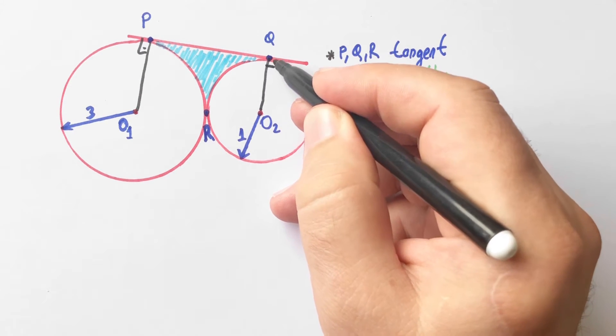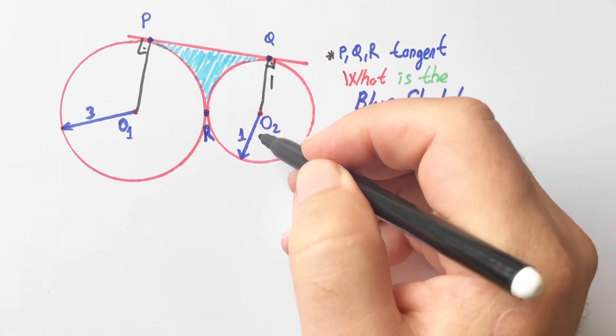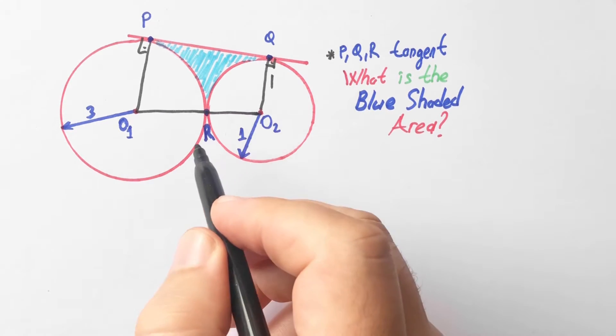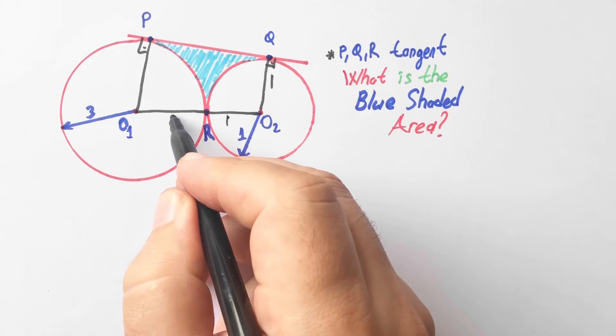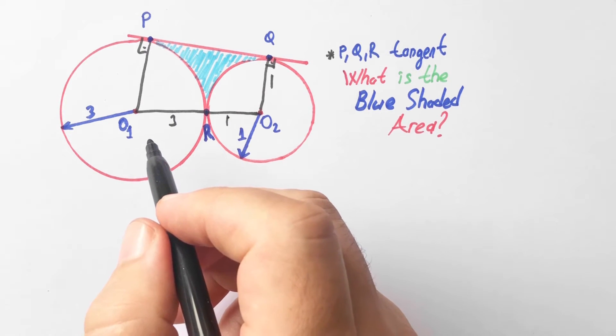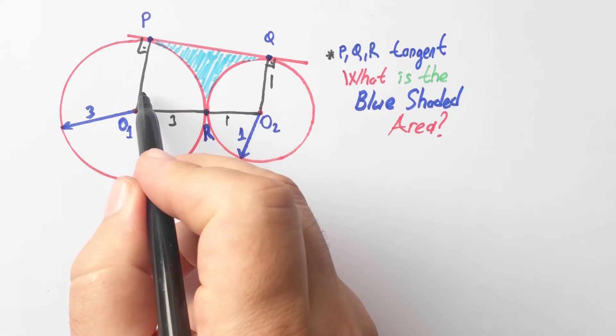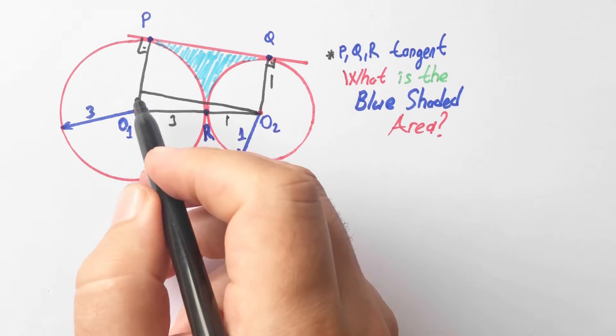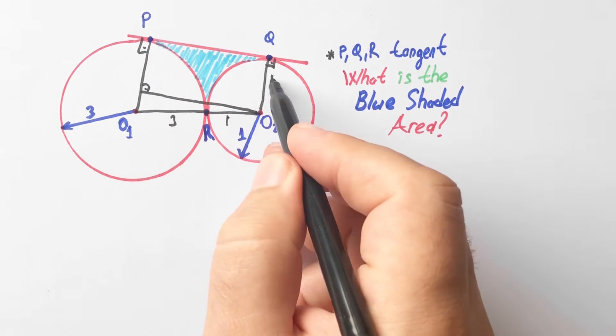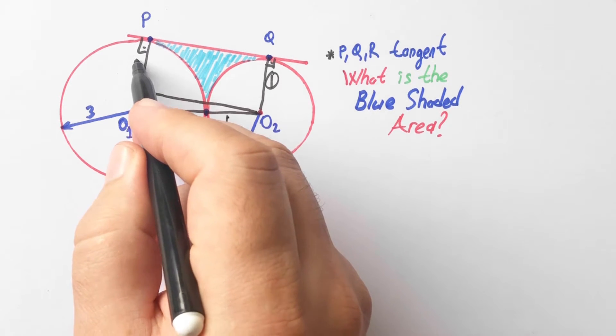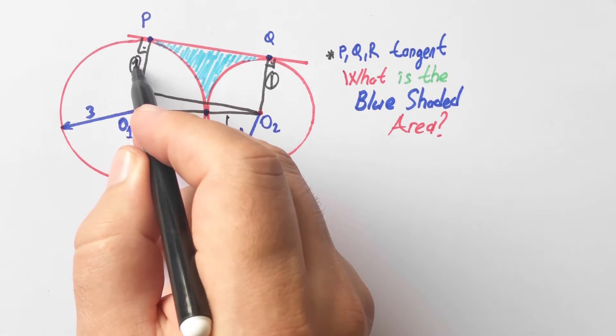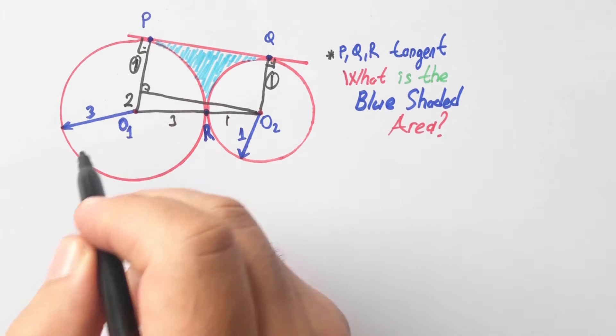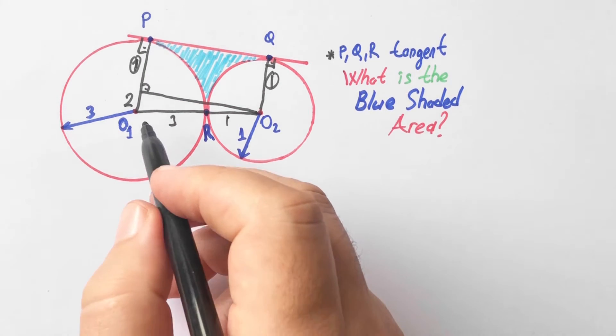Radius is one. So if we connect, the radii are linear because of tangent. Let's draw a perpendicular one more. Radius is one, so here is one unit. The big radius is three units, so two units left here.